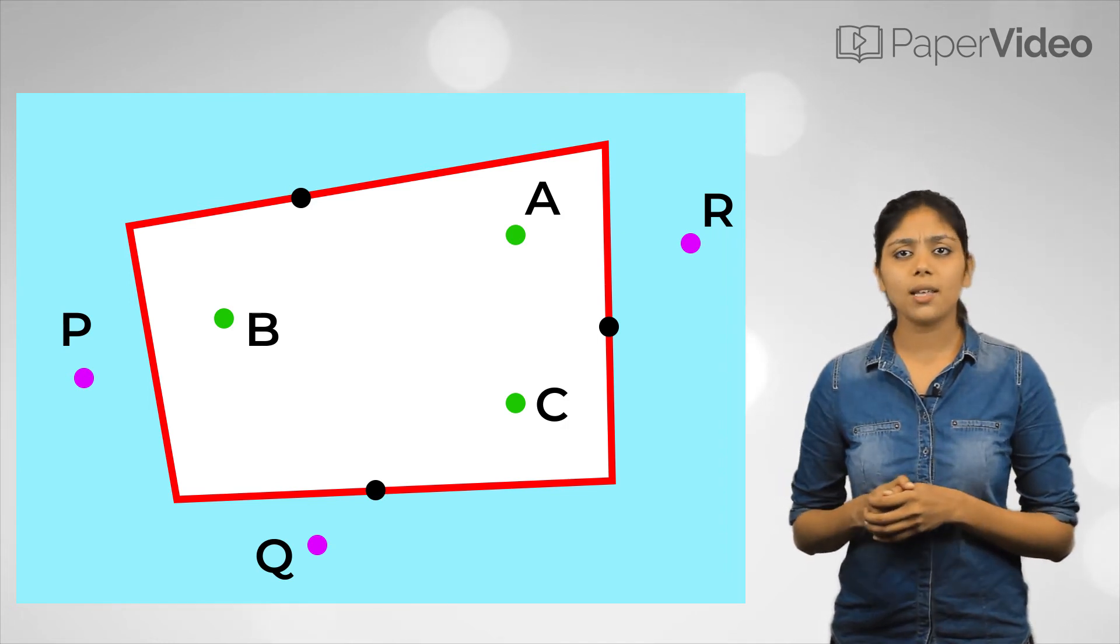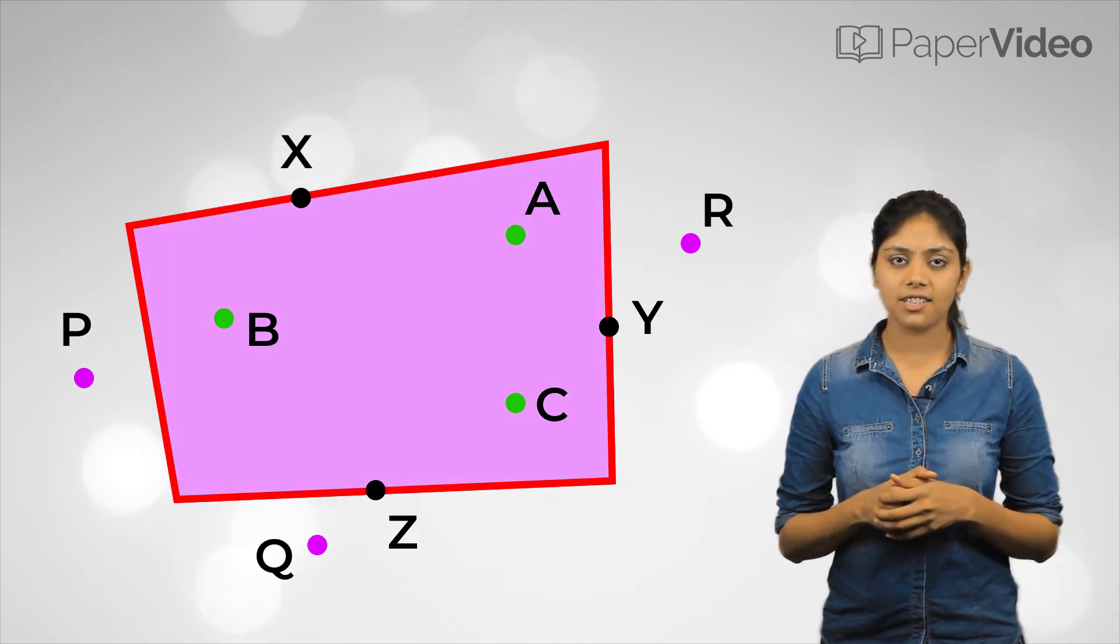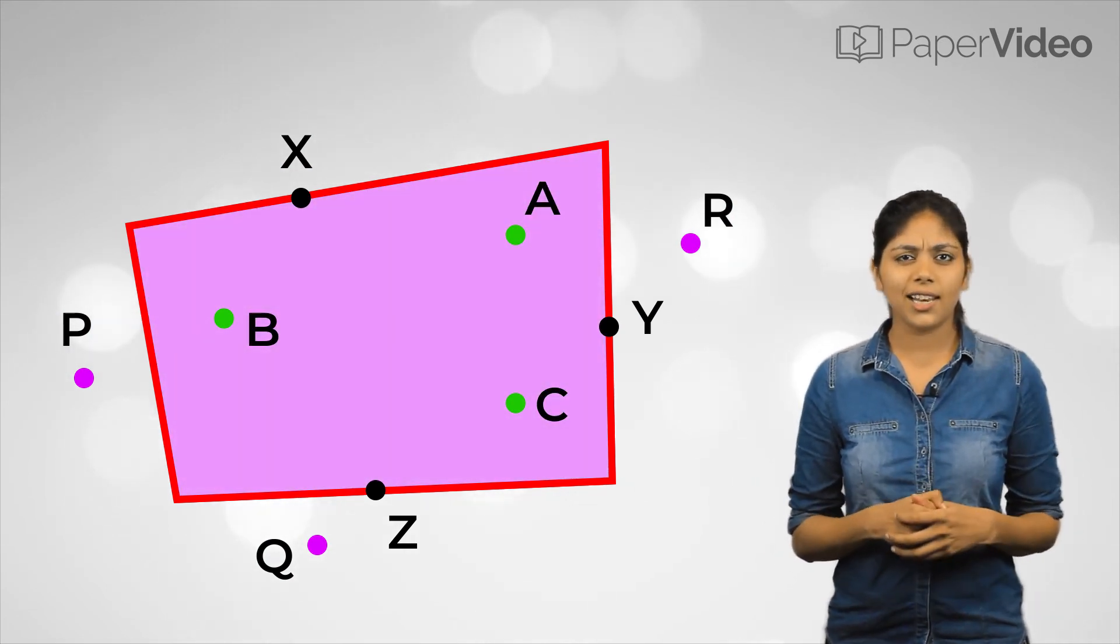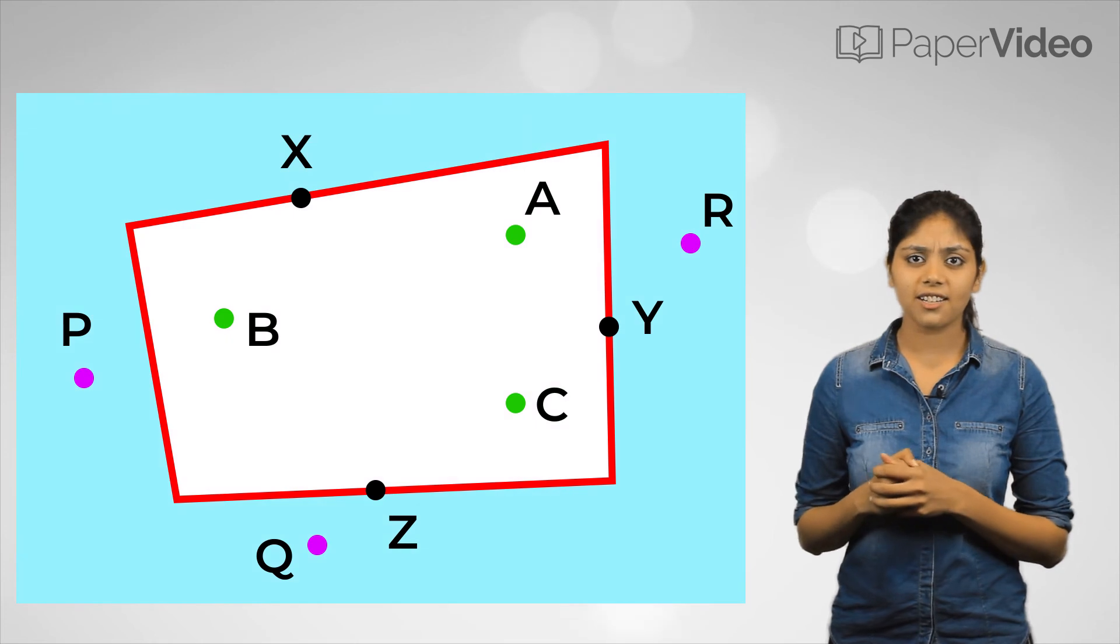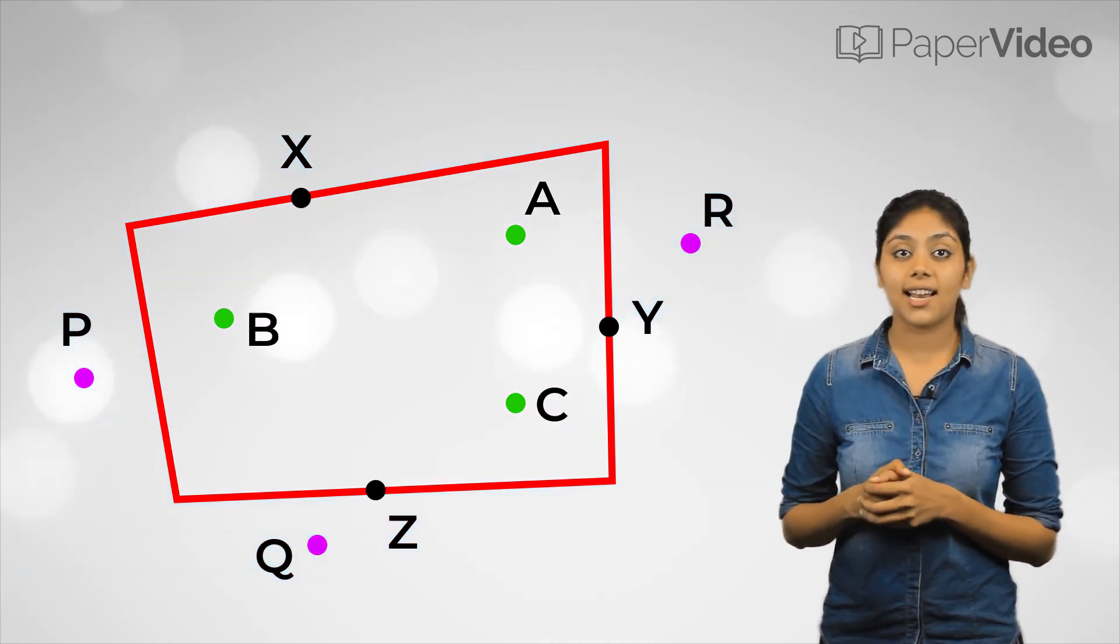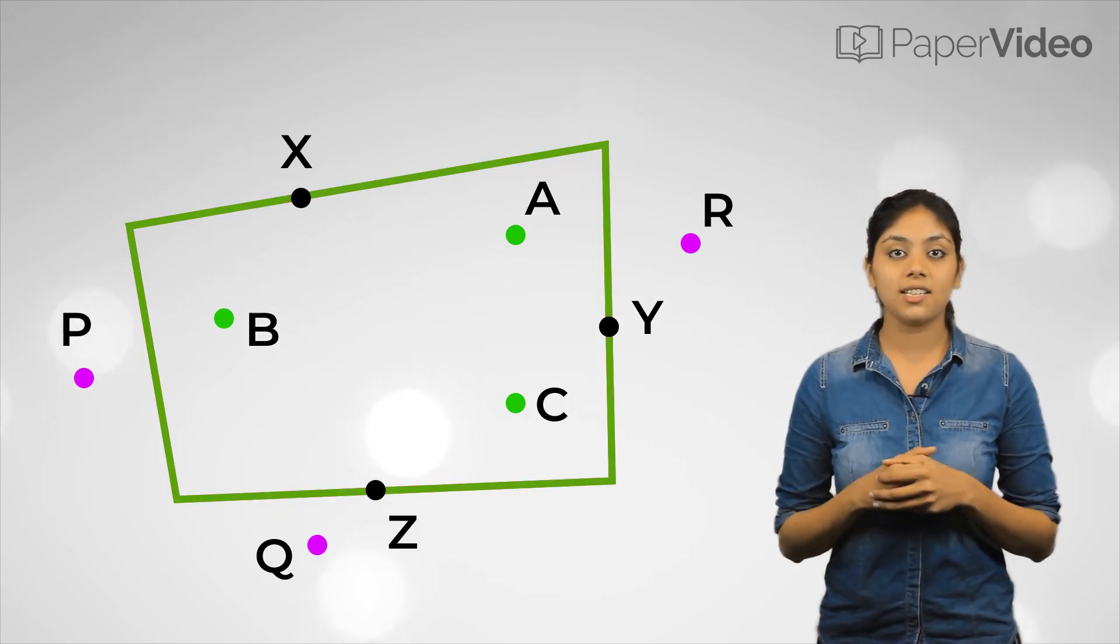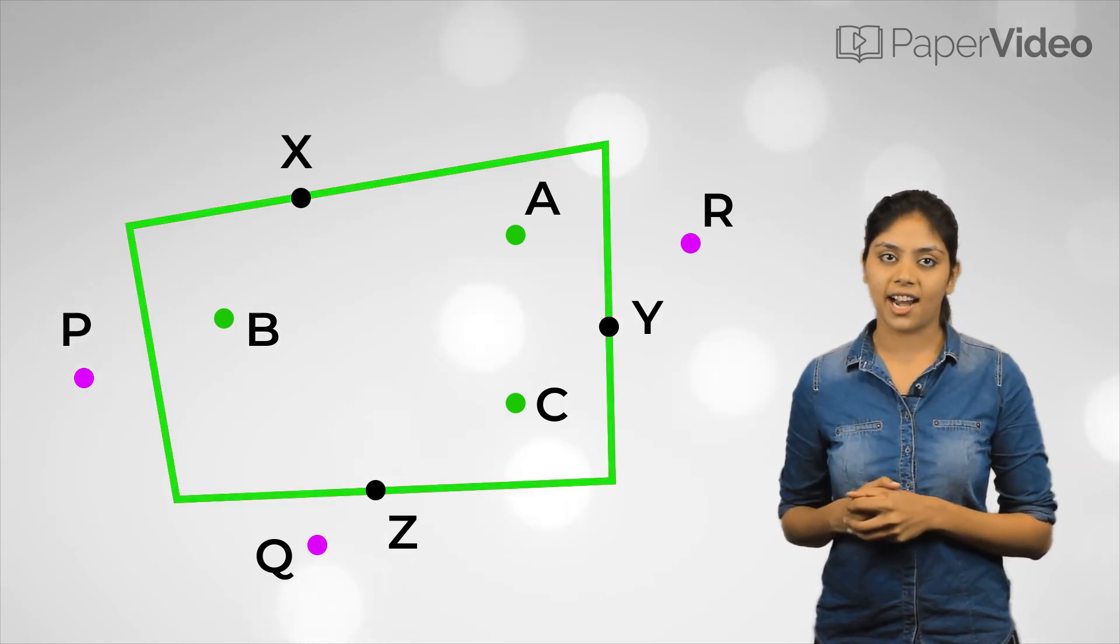Now, look at the points X, Y and Z. Do they lie in the interior of the quadrilateral? No. Do they lie in the exterior of the quadrilateral? No. As you can see, these points lie on the quadrilateral. This outline of the quadrilateral is known as the boundary of the quadrilateral.